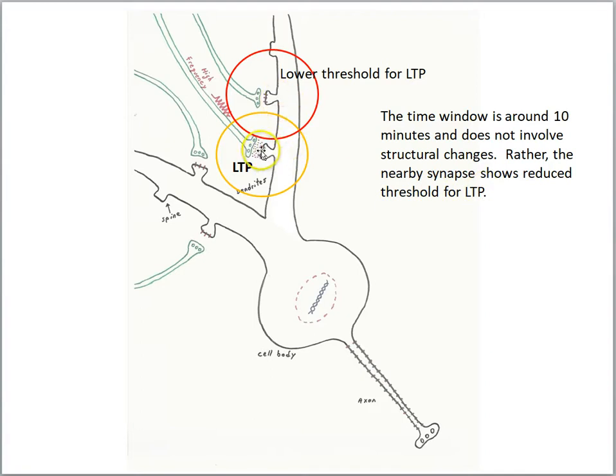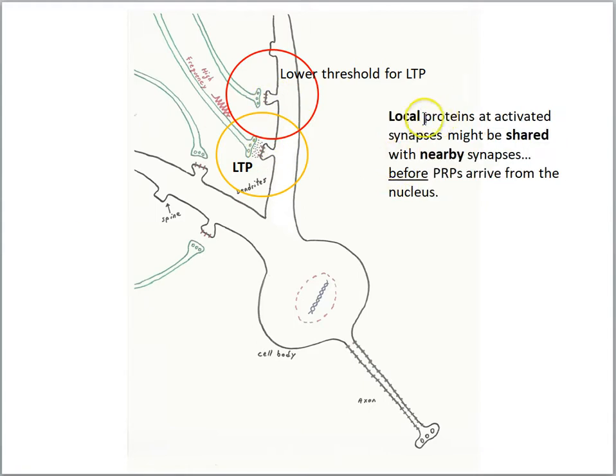Again, LTP at this synapse, some biochemical events are happening here that is lowering the threshold for LTP at a nearby synapse. It could be that local proteins are activated, or the activated synapses might be shared with nearby synapses before any of the plasticity-related products arrive from the nucleus. So this is a local phenomenon.